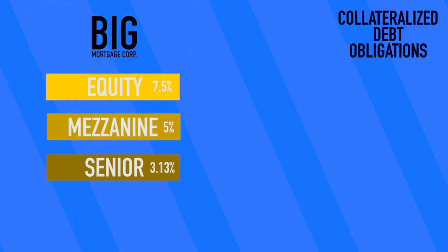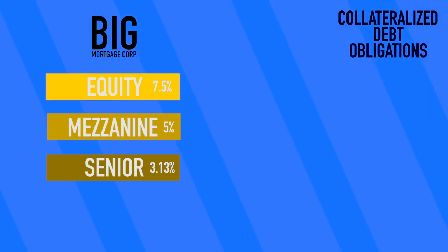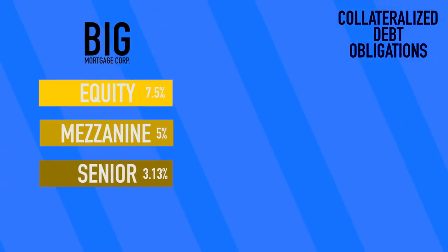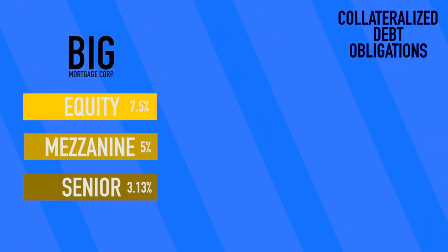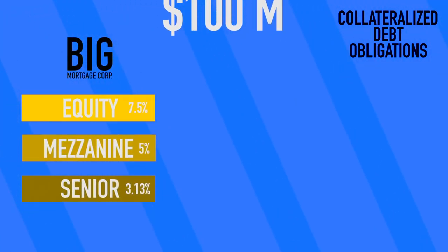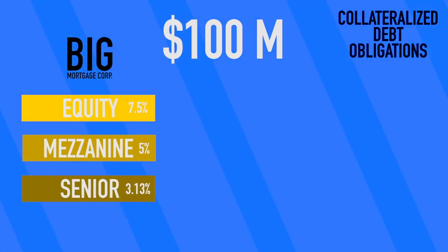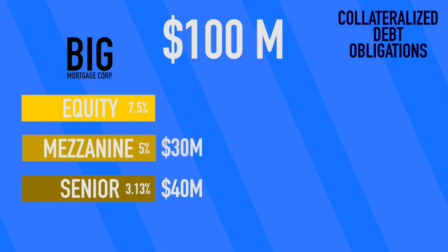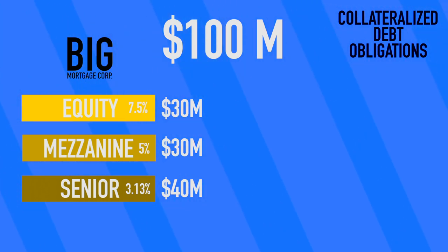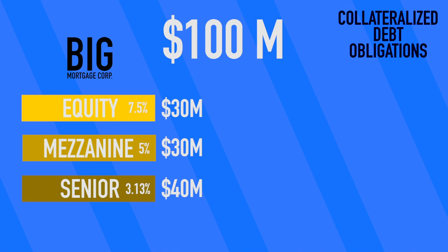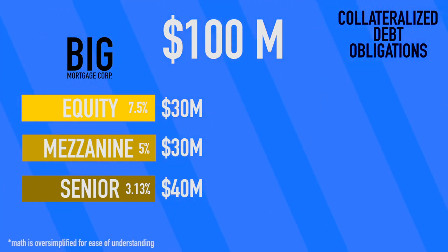CDOs are just mortgage-backed securities that have different levels of risk and different rates of return. Now let's take a look at the actual math. For the original $100 million in loans, let's say we sold $40 million to the senior CDO, $30 million in the mezzanine, and another $30 million in the equity tranche. For simplicity, we're going to ignore the need for the investment bank to make a profit on selling these stocks, and just look at that initial sale.